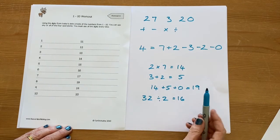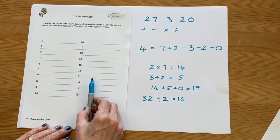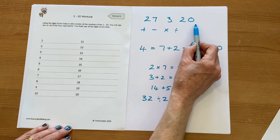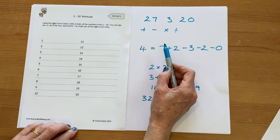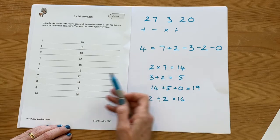So your challenge is to try and make all the numbers from 1 to 20 using these five digits and any combination of the four operations. Spend a bit of time on it today, see how many you can get, and then you can always come back to this another day.